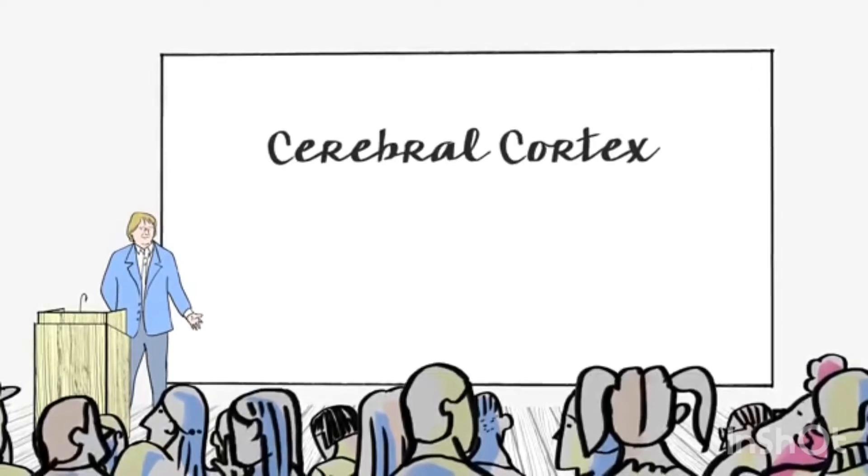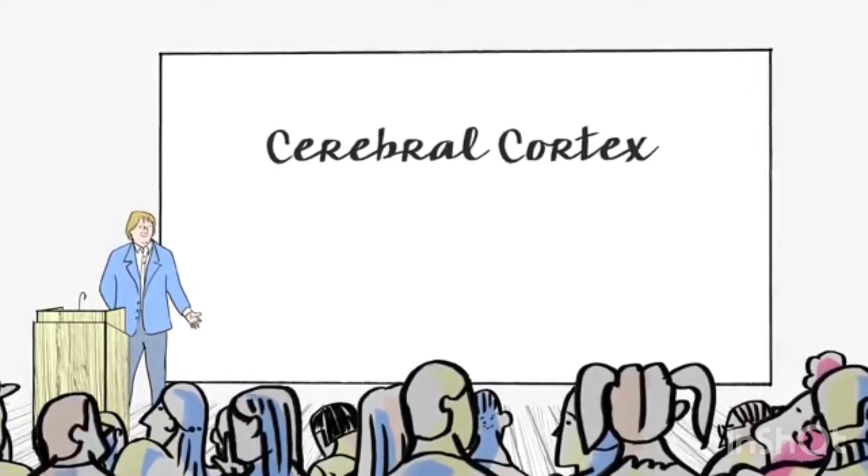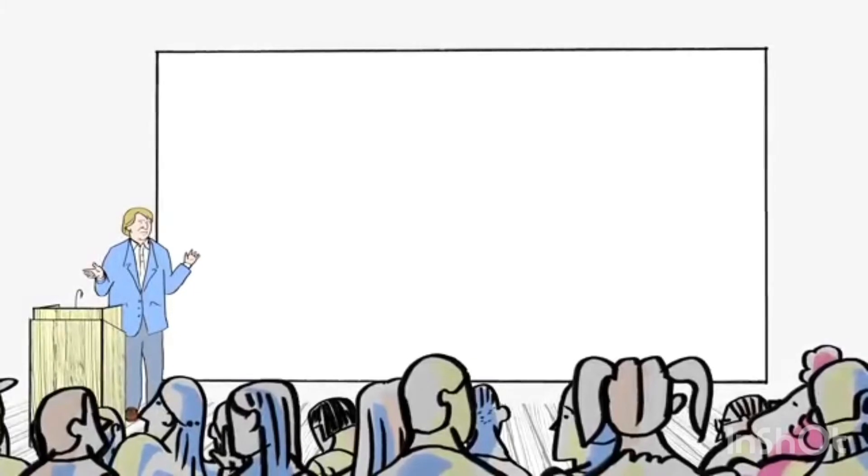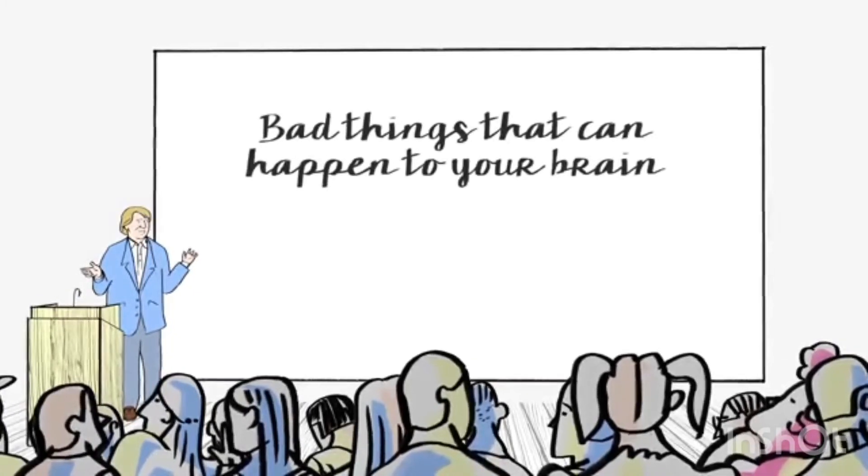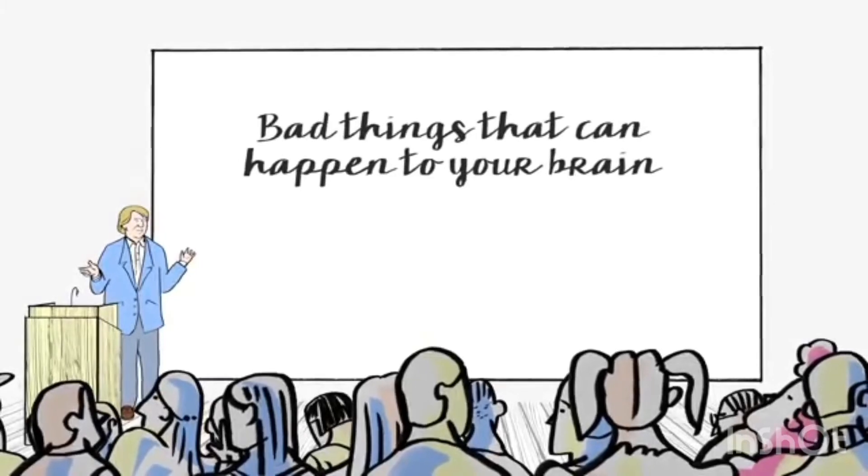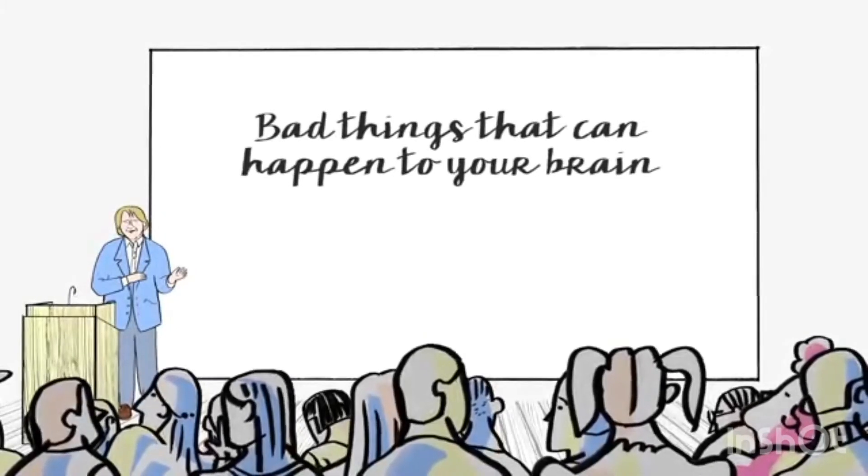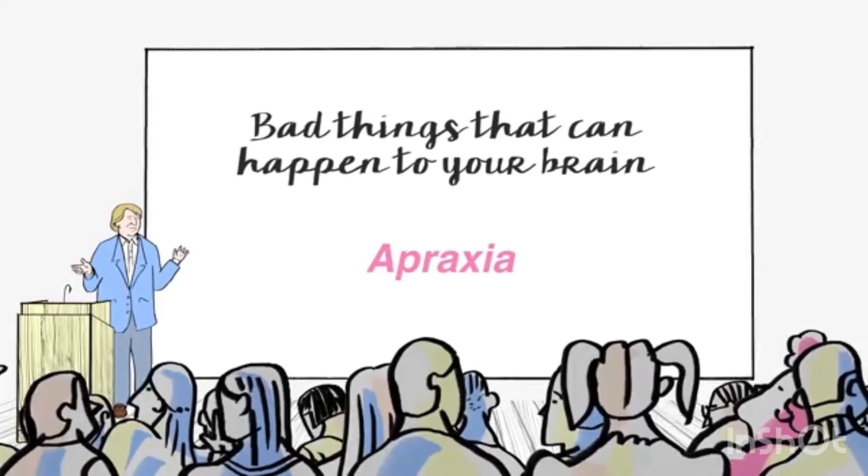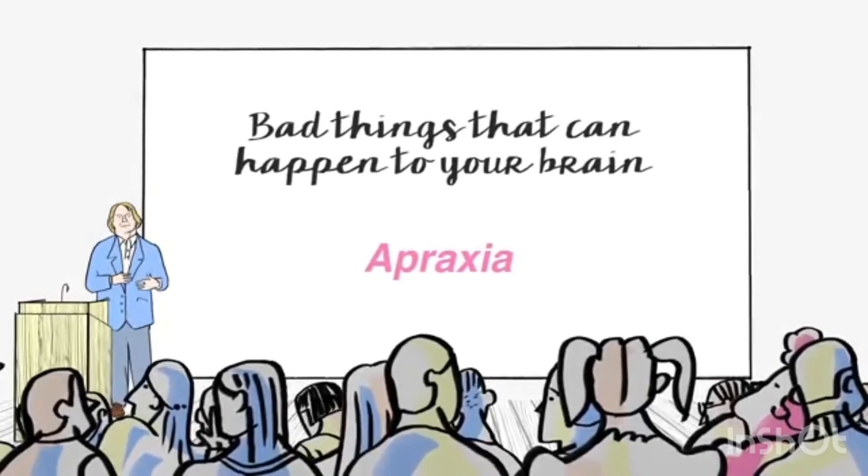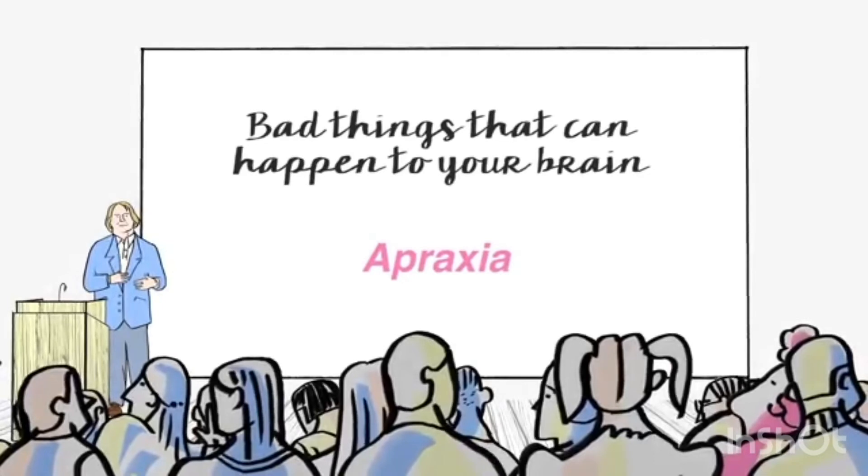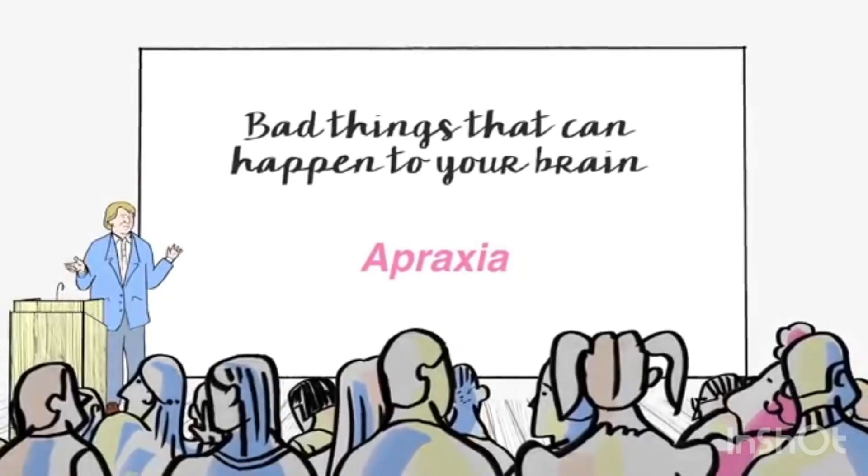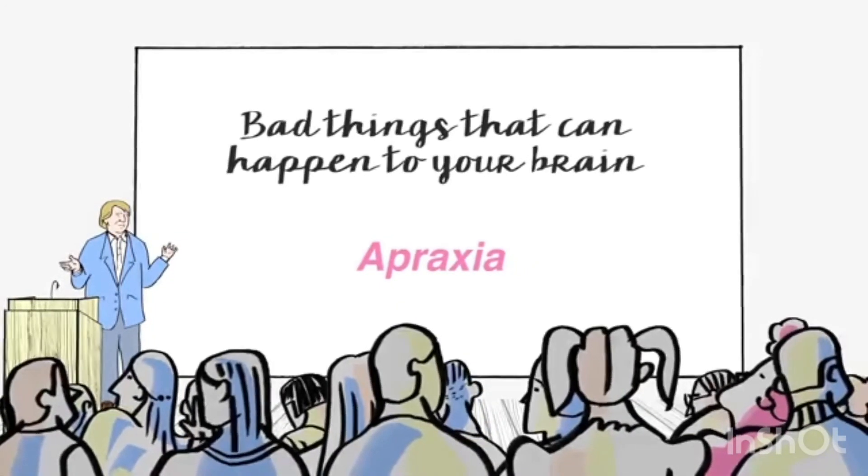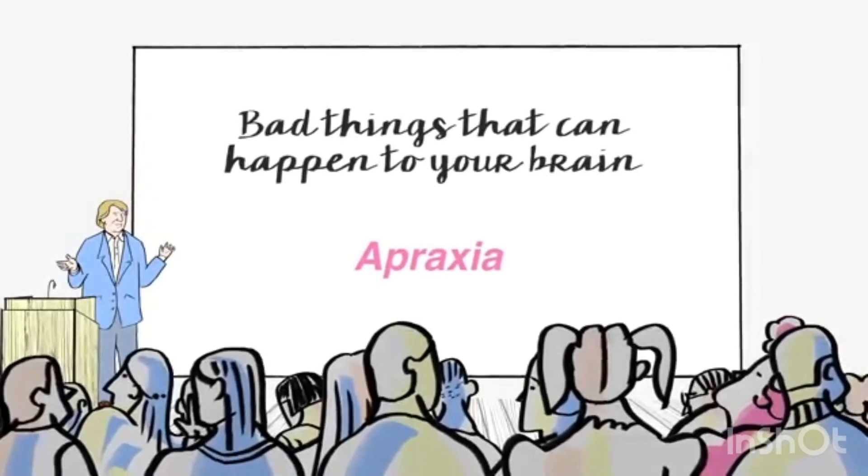There's also a specific form of agnosia where you can't recognize faces. Oliver Sacks wrote a wonderful book many years ago called The Man Who Mistook His Wife for a Hat. This was a series of problems of people who had surprising neurological disorders.